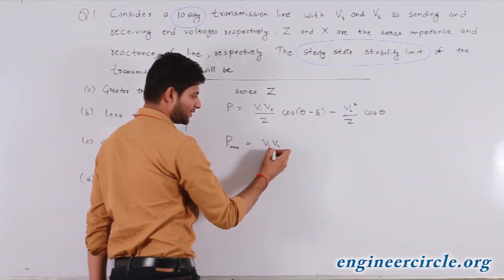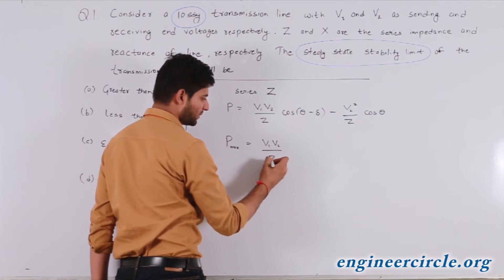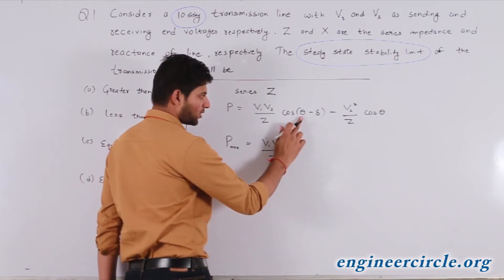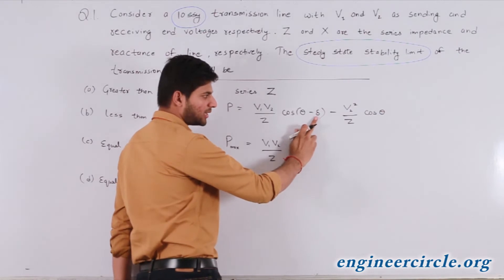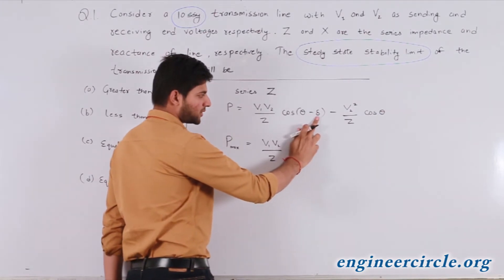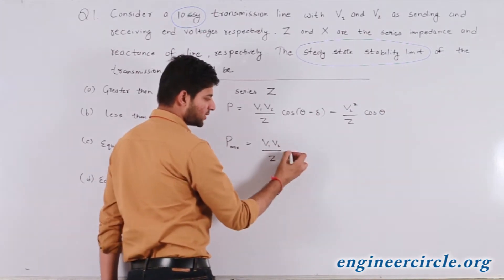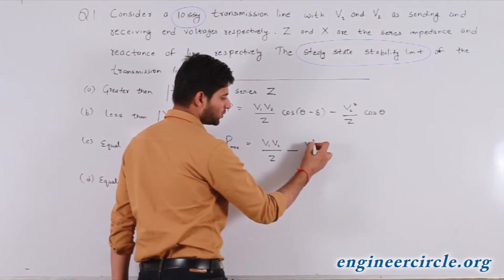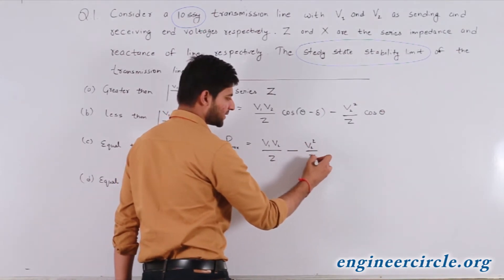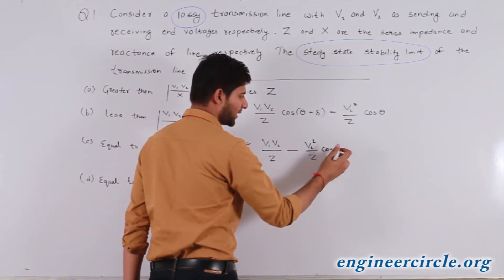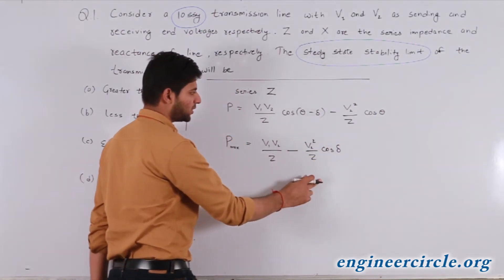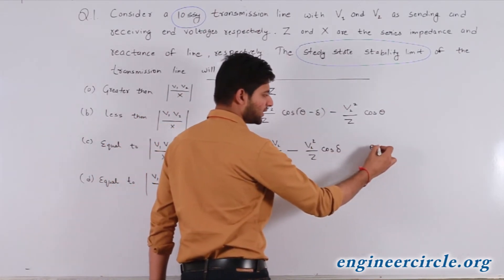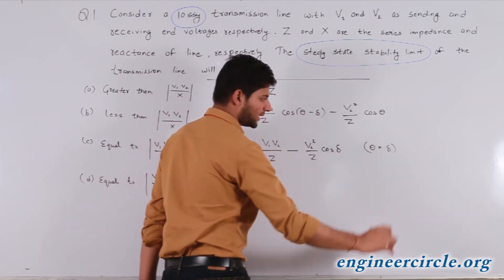When θ equals δ, the maximum power value will be V1V2/Z · cos(θ − δ). Since both are equal, this becomes cos(0°) = 1. So the expression becomes V1V2/Z minus V2²/Z · cos δ. In the case of maximum power transfer, θ gets equal to δ.